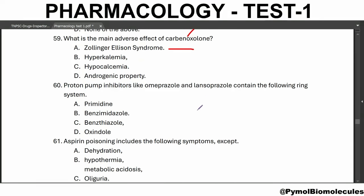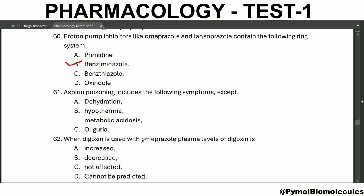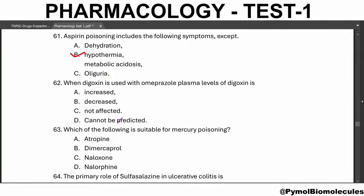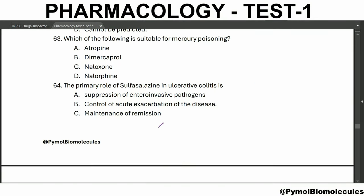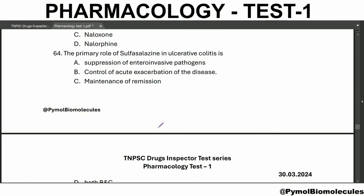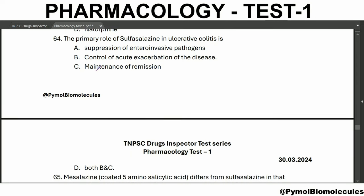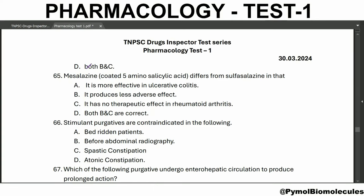Proton pump inhibitors like omeprazole and lansoprazole contain the benzimidazole ring system. Aspirin poisoning includes the following symptoms except hypothermia. When digoxin is used with omeprazole, plasma levels of digoxin are decreased. Which of the following is suitable for mercury poisoning? Dimercaprol. The primary role of sulfasalazine in ulcerative colitis is maintenance of remission. Coated 5-aminosalicylic acid differs from sulfasalazine in that it produces less adverse effects and has no therapeutic effect in rheumatoid arthritis.